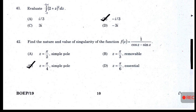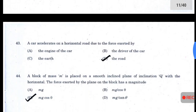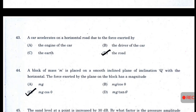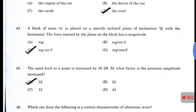A car accelerates on a horizontal road due to the force exerted by the road. A block of mass m is placed on a smooth inclined plane of inclination θ with the horizontal. The force exerted by the plane on the block has magnitude m·g·cos(θ).